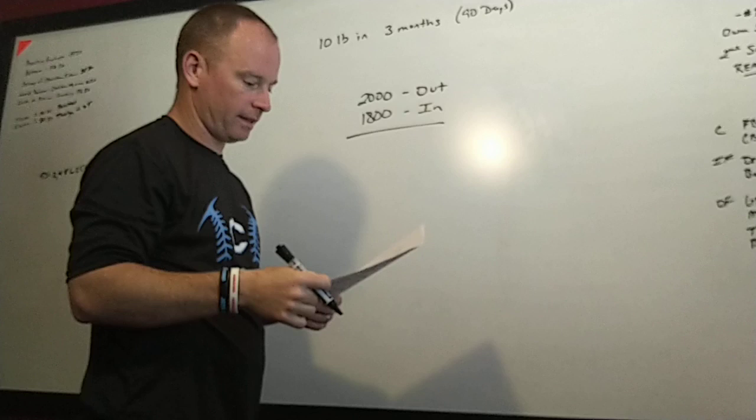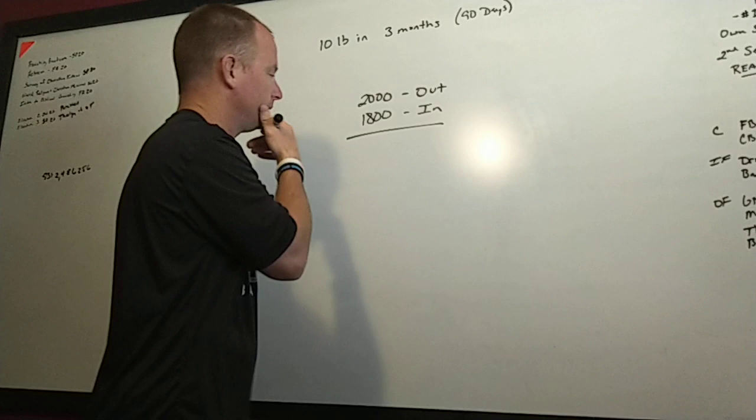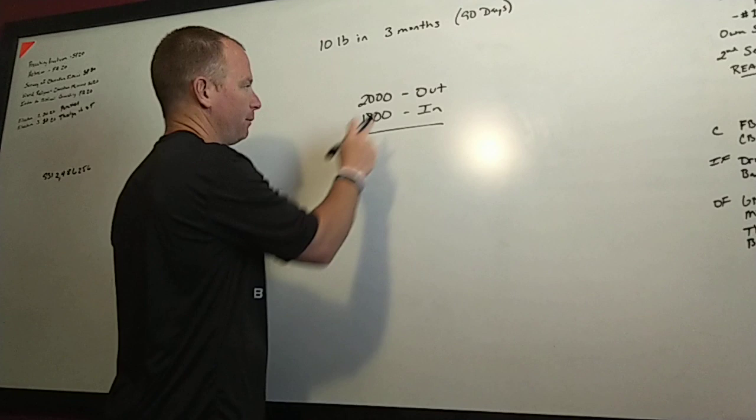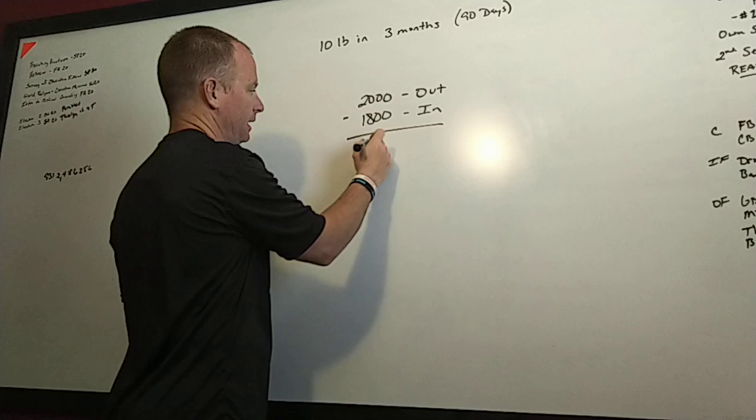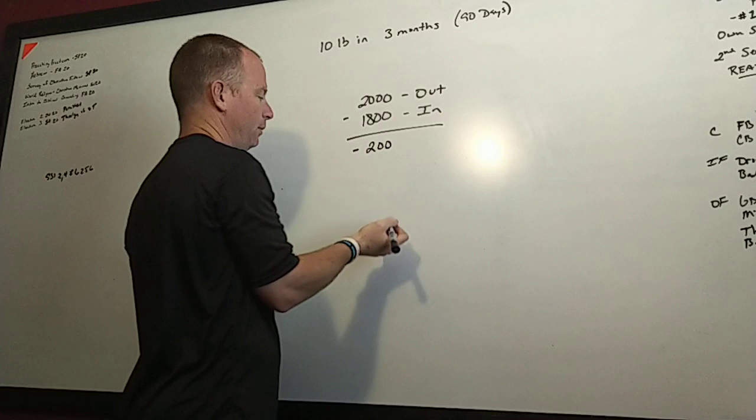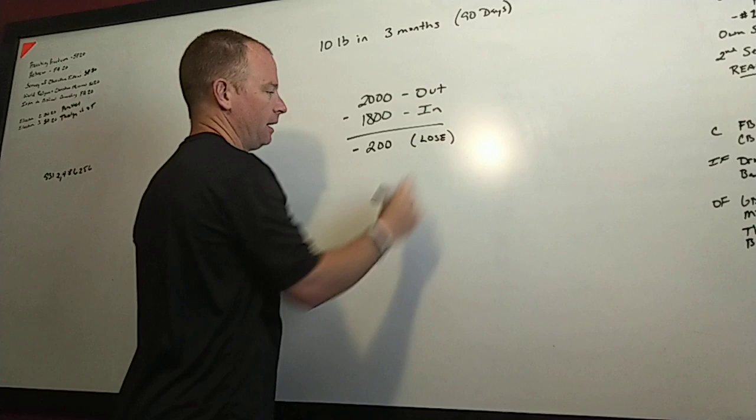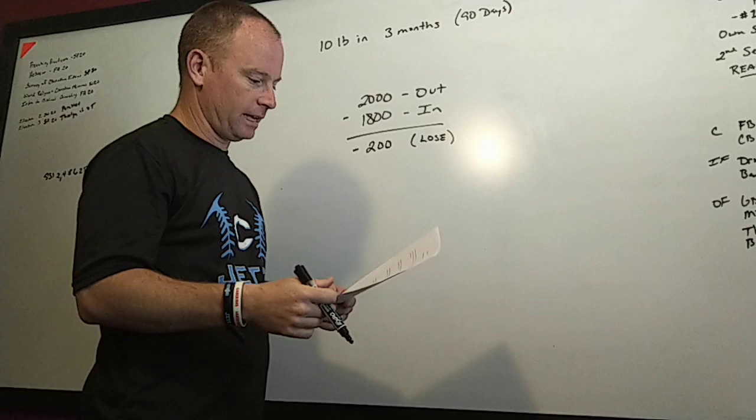He asks us, after three months will he meet his goal? Well, we don't know that yet. We've got to determine: does he have excess per day or does he have a deficit? If he's got more going out than going in, then he's going to have a deficit. Well, how big? We just do a little subtraction. He's got a 200 calorie deficit each day. This means he is going to lose weight.